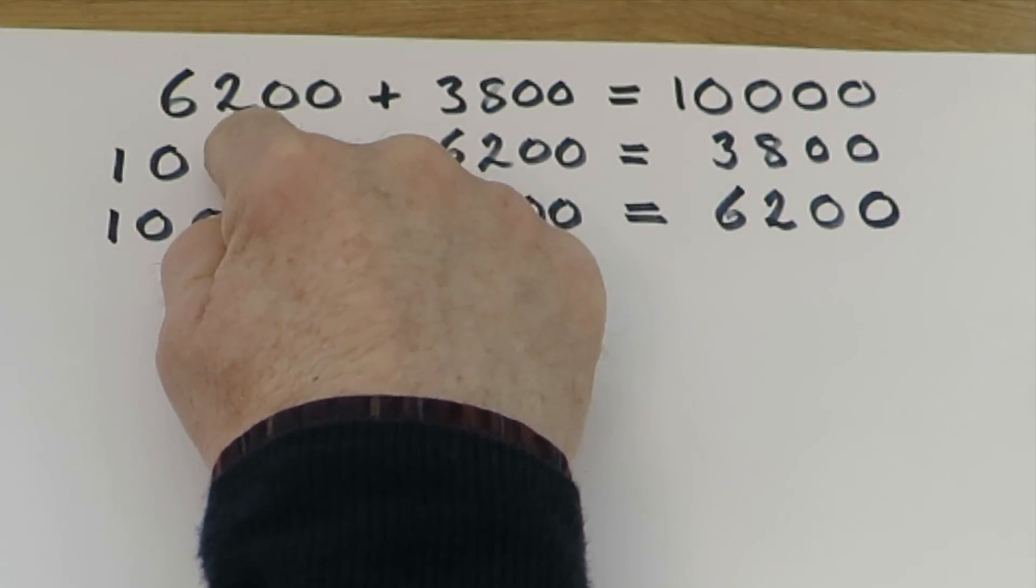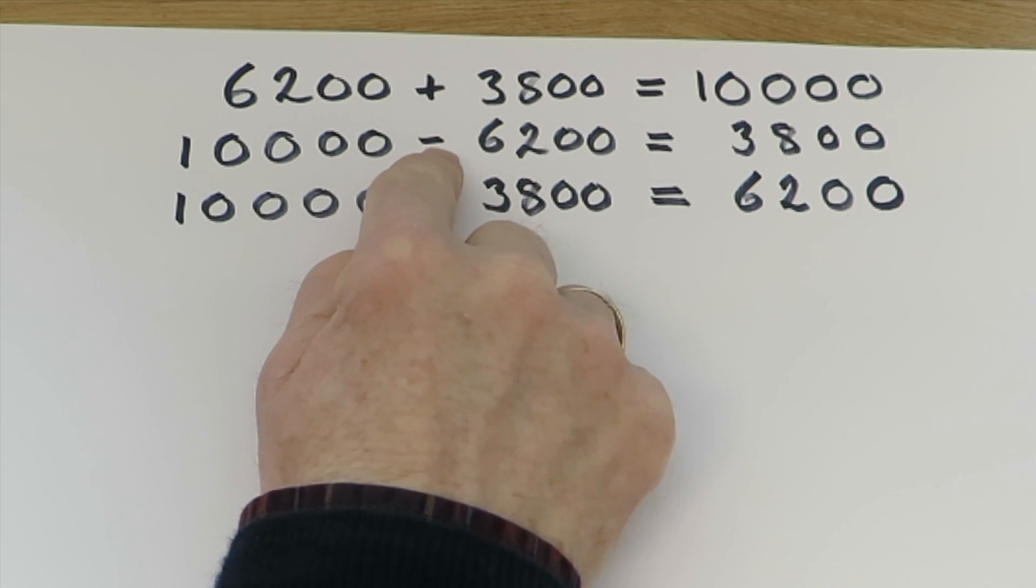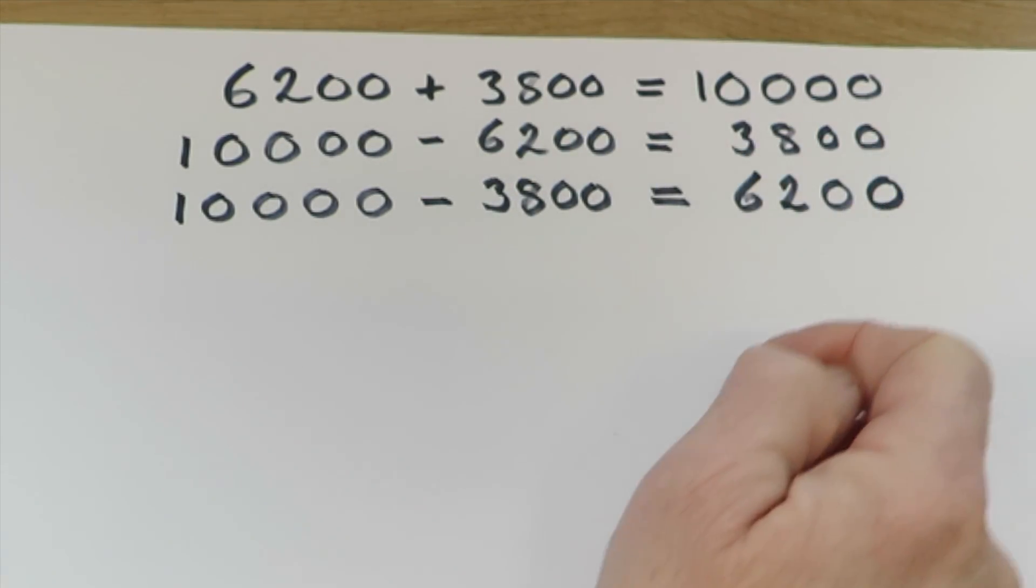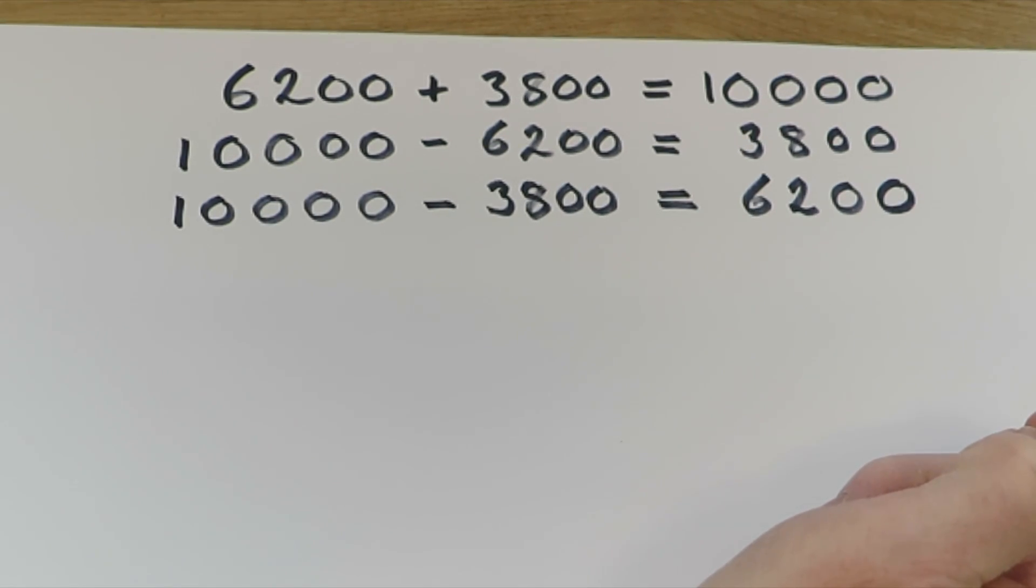For example, because 6,200 plus 3,800 makes 10,000, then 10,000 take away 6,200 must be 3,800, and 10,000 minus 3,800 must be 6,200.